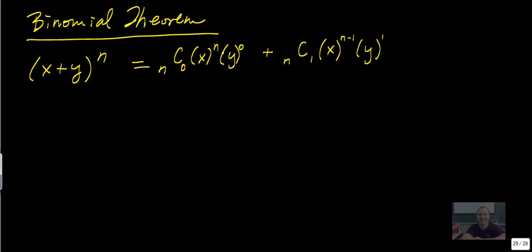So this coefficient, or this exponent, always comes down. I'll write one more here. And we've got n choose 2. We have x to the power of n minus 2 now, and y to the 2.